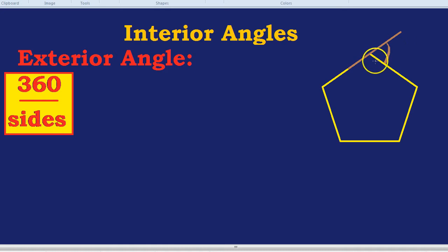Now, to find that, we would do 360 degrees divided by the number of sides. For a pentagon, it has five sides, so we'd do 360 degrees divided by five, as I showed in a different video. That was 72.